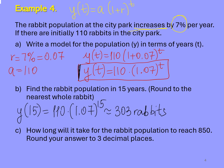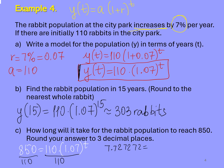Example C: we have to find how long it will take for the rabbit population to reach 850. First step, we create an exponential equation: 850 equals 110 times 1.07 to the power of t. We divide both sides by 110, giving us approximately 7.727 equals 1.07 to the power of t. Using the definition of logarithm, we can find T. T equals approximately 30.227 years.